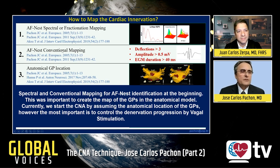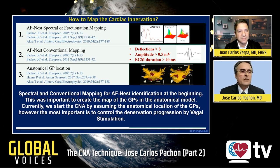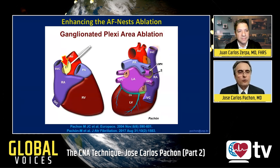It's possible to do the AF nest conventional mapping, and also it's possible to do the anatomical GP location. Several authors have been doing only anatomical GP location, and it is possible to get good results with this approach.